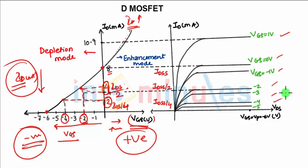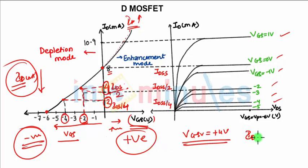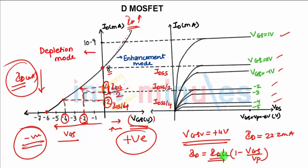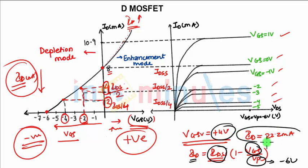When you similarly plot this with the output characteristics, it will give you the graph as shown in the figure. Now if your VGS value is +4 volts, for this particular value it will give you ID as 22.2 mA. The equation for ID in the case of the MOSFET is: ID = IDSS × (1 − VGS/VP)². With IDSS = 8 mA, VGS = +4 V, and VP = −6 V, substituting gives ID ≈ 22.2 mA.